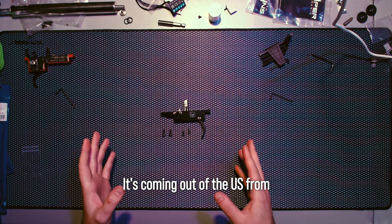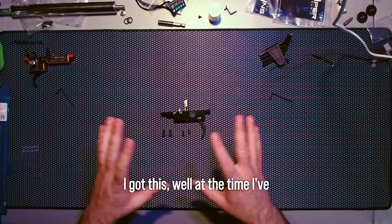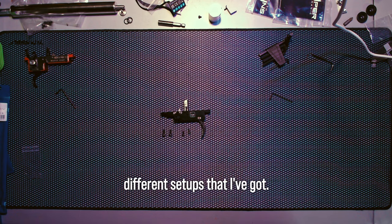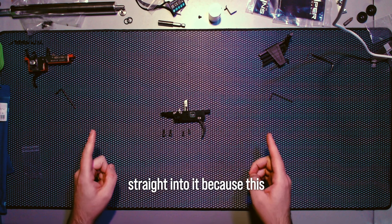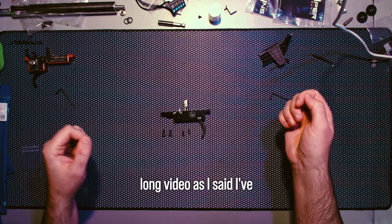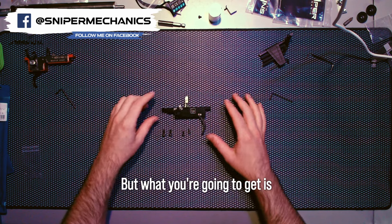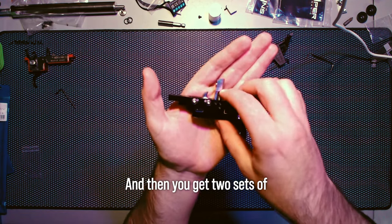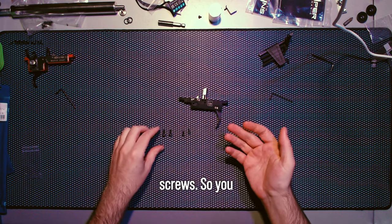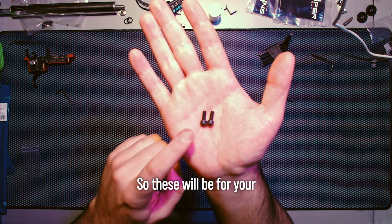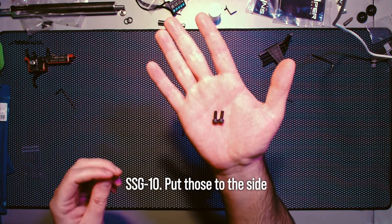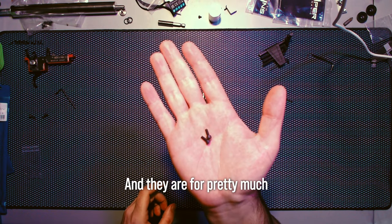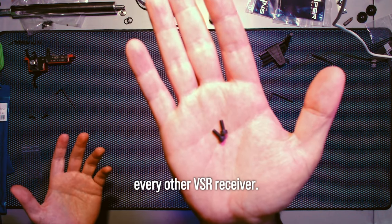It's coming out of the US from a guy called Namek. I got this maybe a month or so ago and I've tried it in a load of different setups. This isn't gonna be a massively long video. What you're gonna get is the trigger itself, two sets of screws - M4 screws for your SSG 10 and standard M3 screws for pretty much every other VSR receiver.